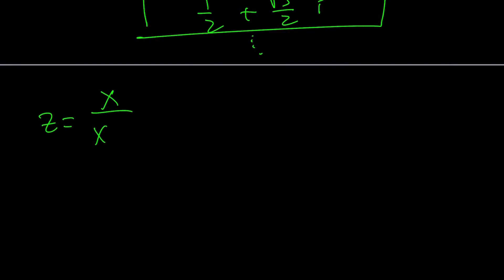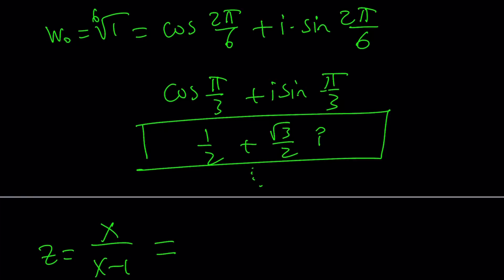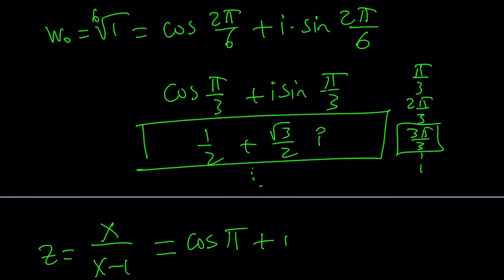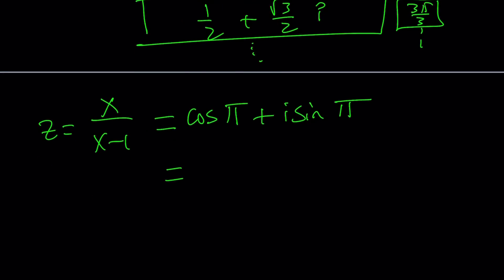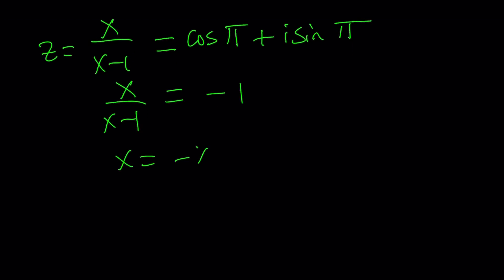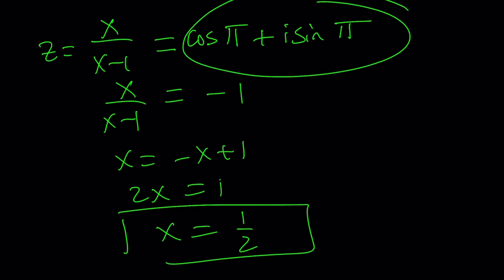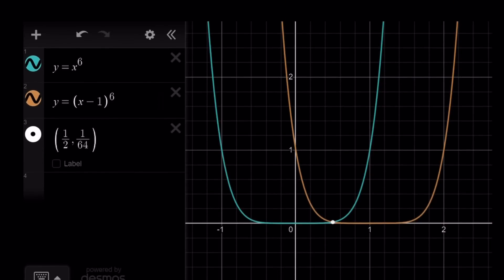One of the sixth roots of unity is cosine pi plus i sine pi, which equals negative 1. If x over x minus 1 equals negative 1, then x equals negative x plus 1, giving 2x equals 1, so x equals 1 half — the real solution. The other roots of unity yield the complex solutions. Looking at the graph of y equals x to the 6th and y equals x minus 1 to the 6th, they intersect only at x equals 1 half, with the point being 1 half comma 1 over 64, confirming it is the only real solution.